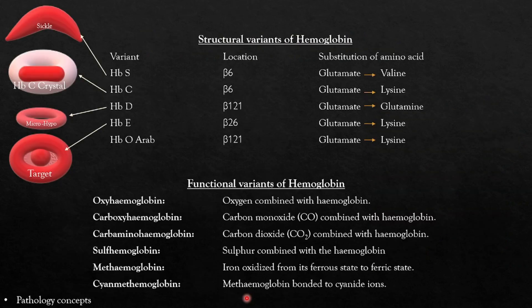Let's see some variants of hemoglobin — first the structural variants. Structural variants are generated by substitution of one amino acid for another at different locations in the globin chain gene. In hemoglobin S, also called sickle cell, glutamate is replaced by valine at the sixth position of the beta chain, which gives rise to sickle-shaped RBCs.